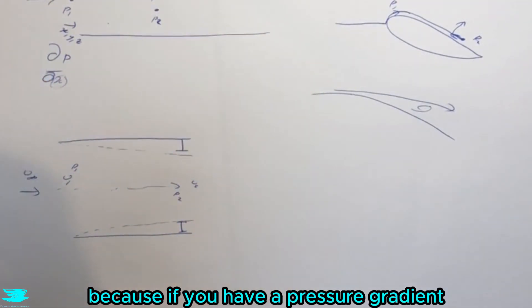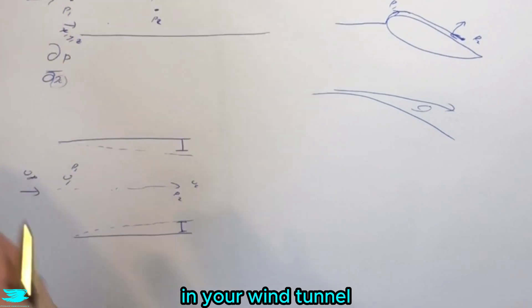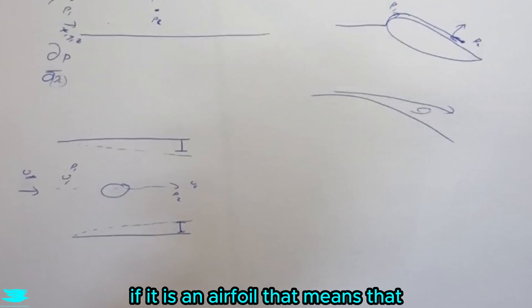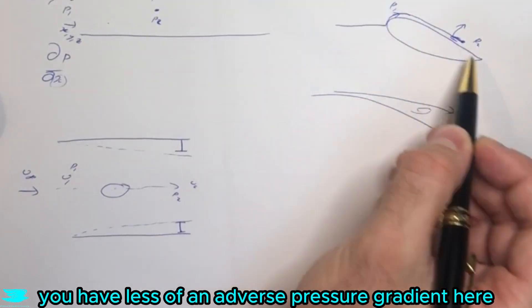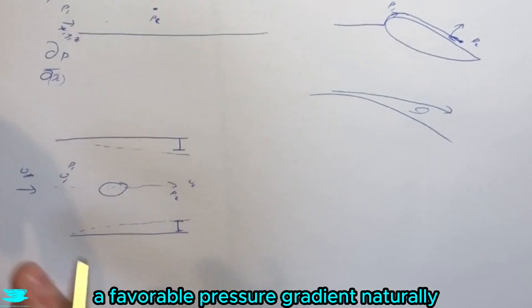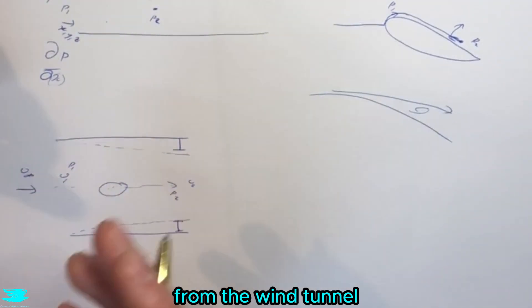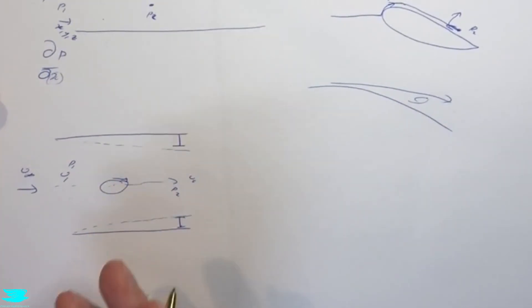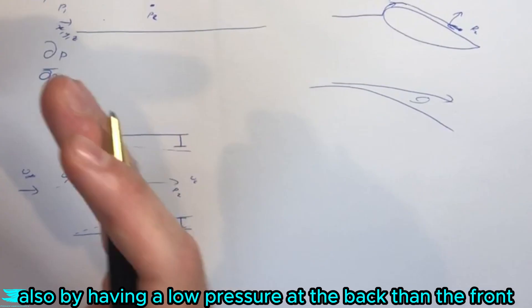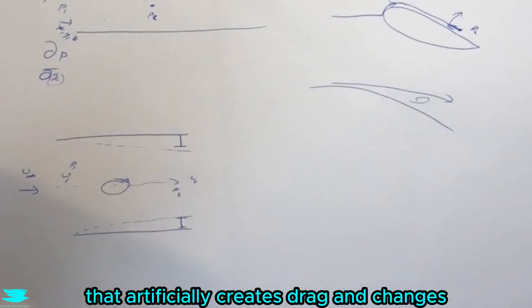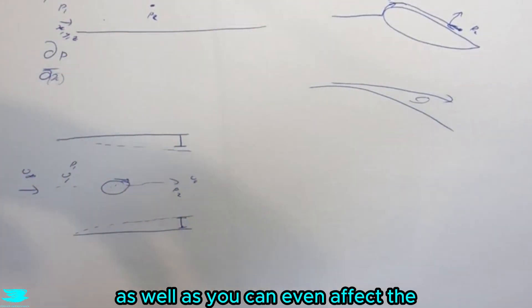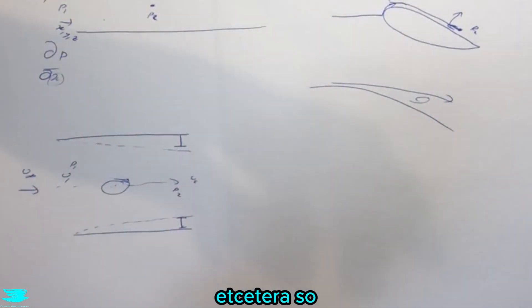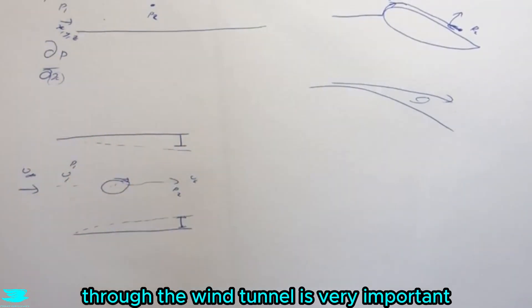This is important for wind tunnels because if you have a pressure gradient in your wind tunnel and you have your object here, this can change a whole bunch of things. For example, if it is an airfoil, you have less of an adverse pressure gradient here because you have a favorable pressure gradient from the wind tunnel's test section which is keeping the flow attached more. Also, having lower pressure at the back than the front artificially creates drag and can even affect the way vortices come off and break down. The pressure gradient through the wind tunnel is very important.